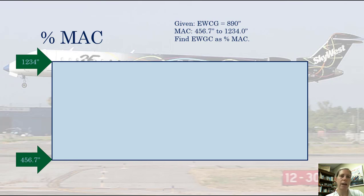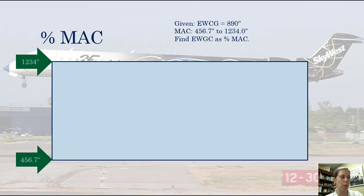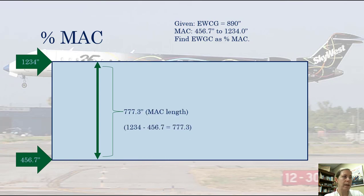Next I'm going to figure out how long the mean aerodynamic chord is — how far it is between the two sides of my rectangular theoretical wing. We can do simple math: subtract the smaller number from the larger number, and we get that the MAC is 777.3 inches long.